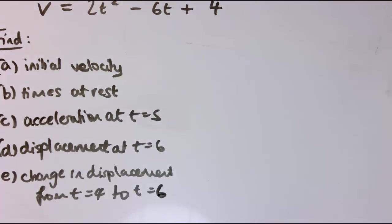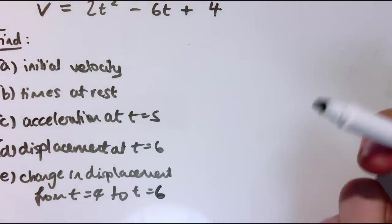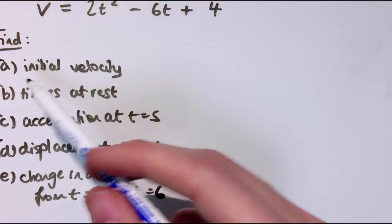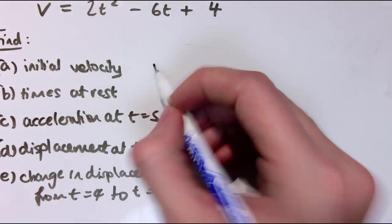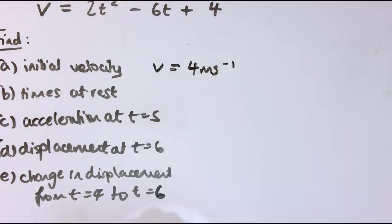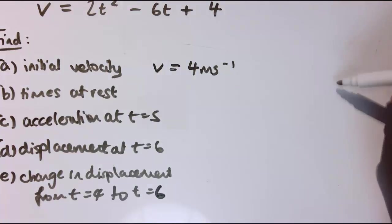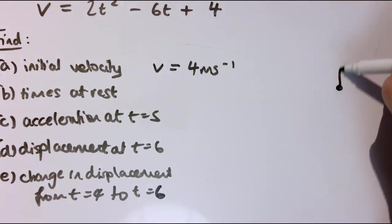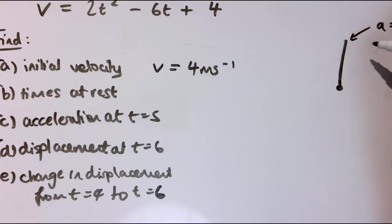Suppose the velocity is given by v = 2t² − 6t + 4 and I want to find several things. The initial velocity is easy: put t = 0 and I get v = 4 m/s. The times when it's at rest are when the velocity equals zero — that's when it's instantaneously stationary, perhaps going up, stopping, then moving back down.